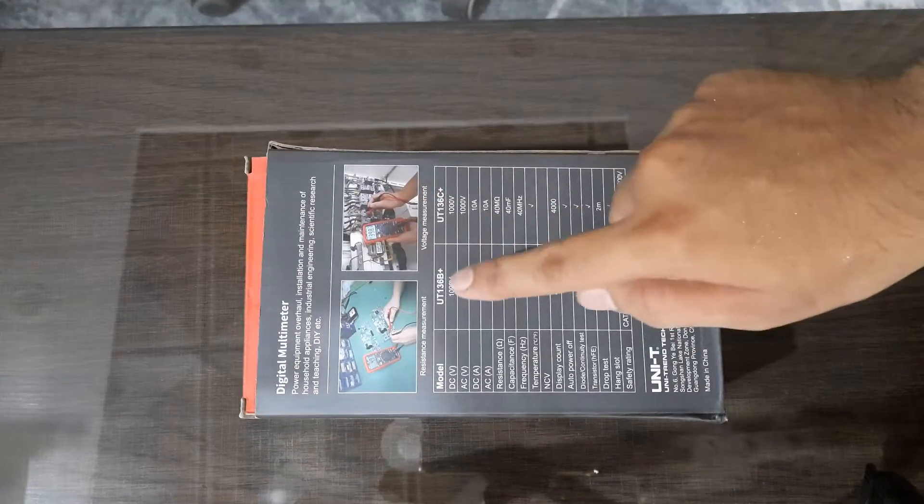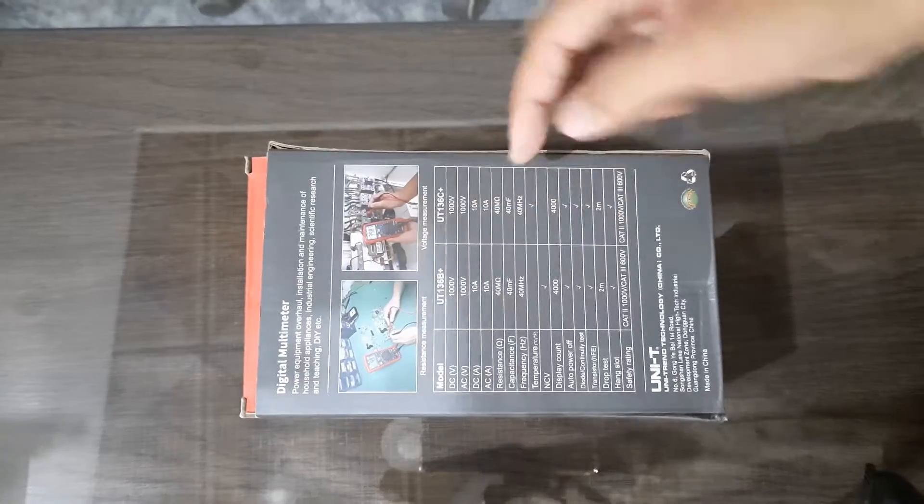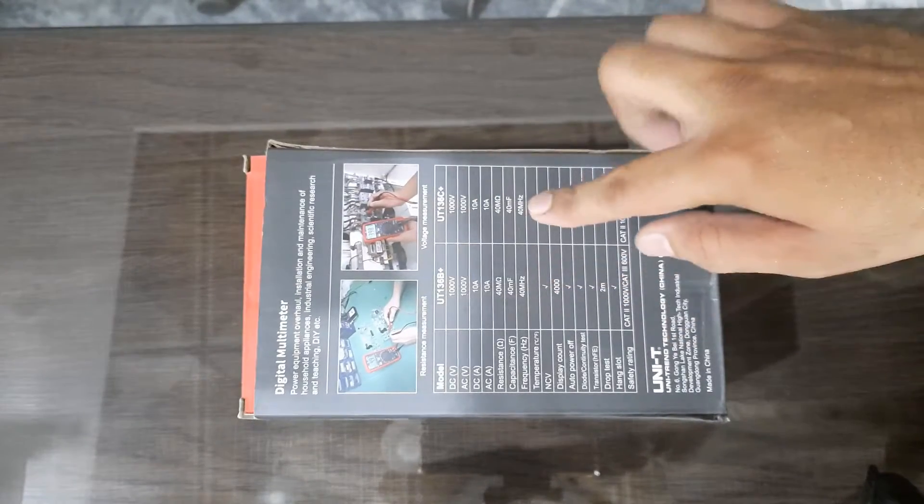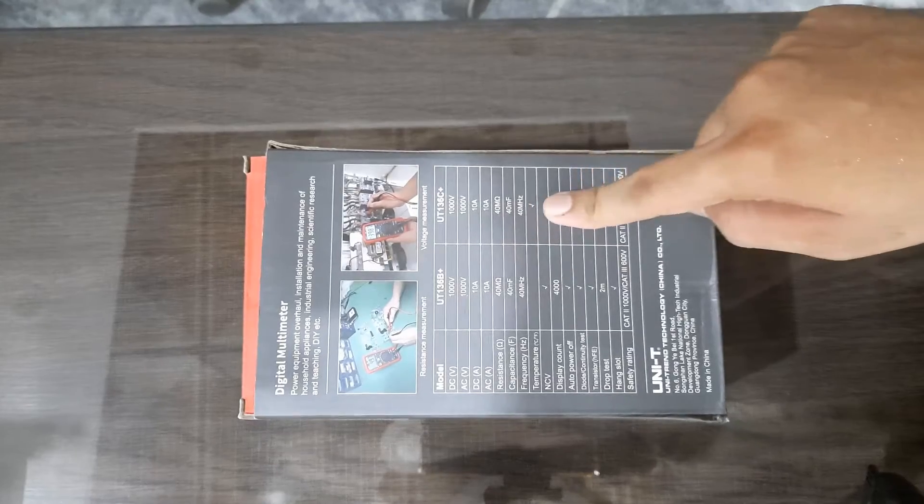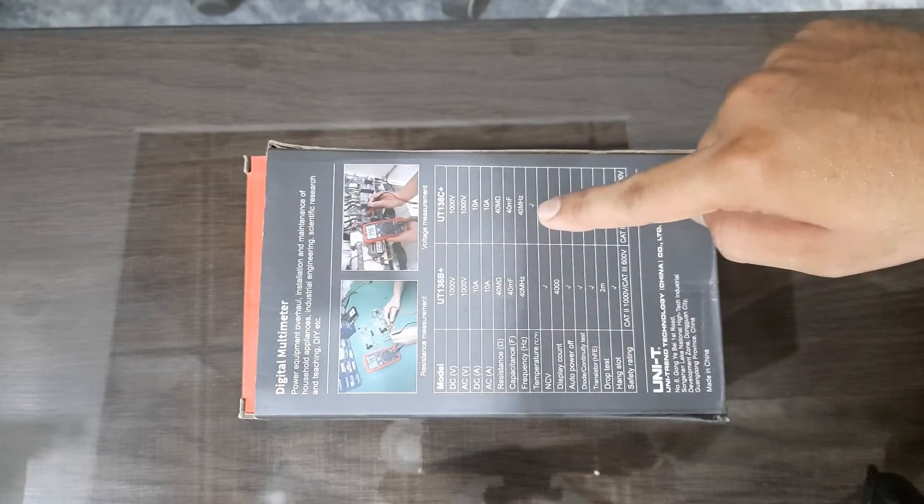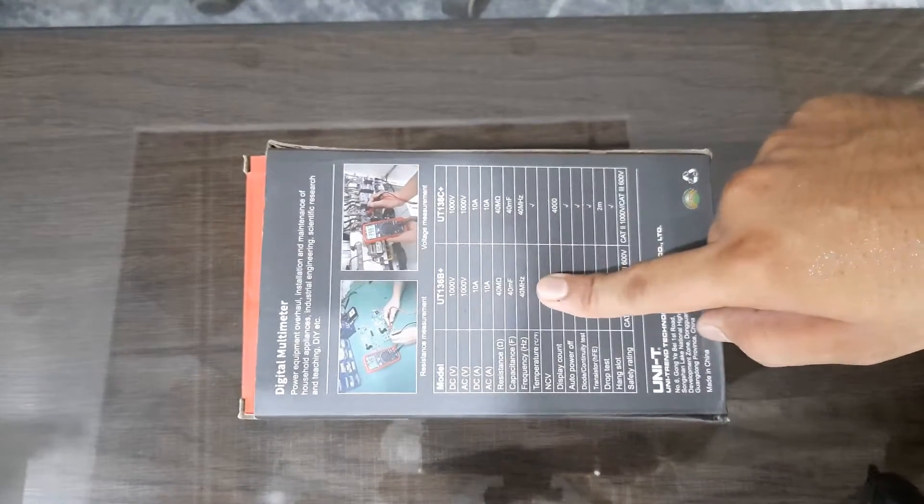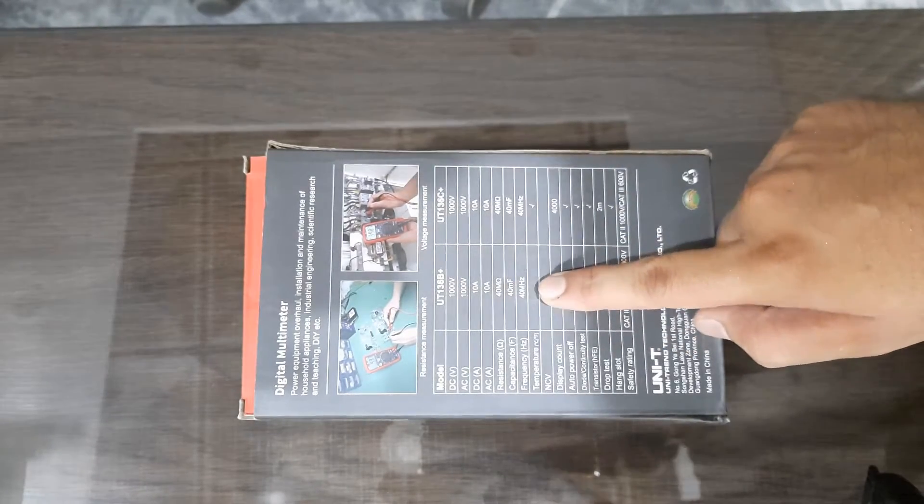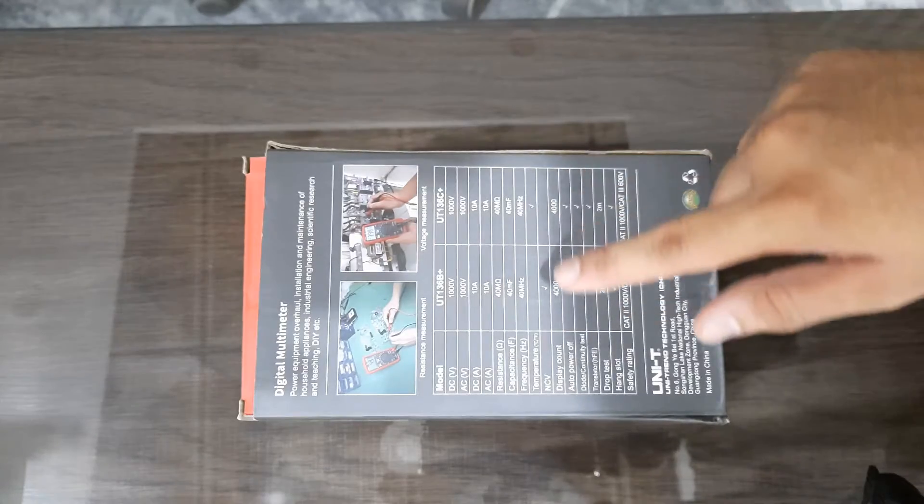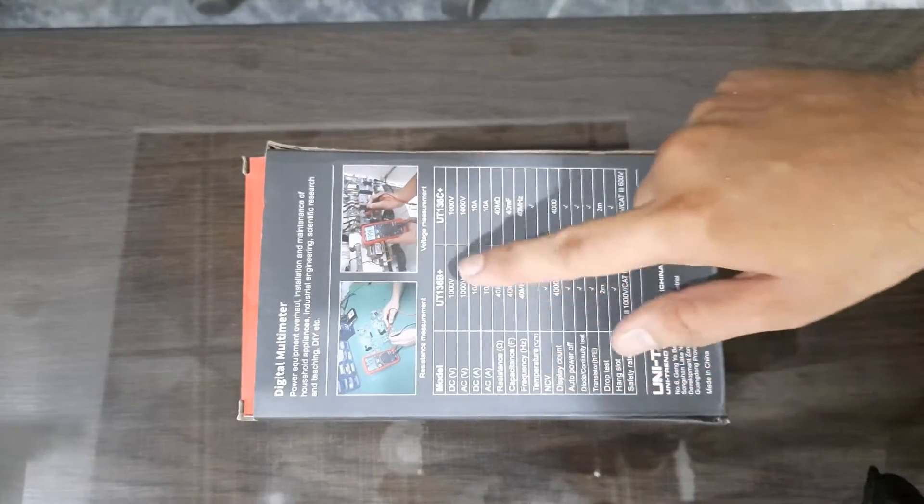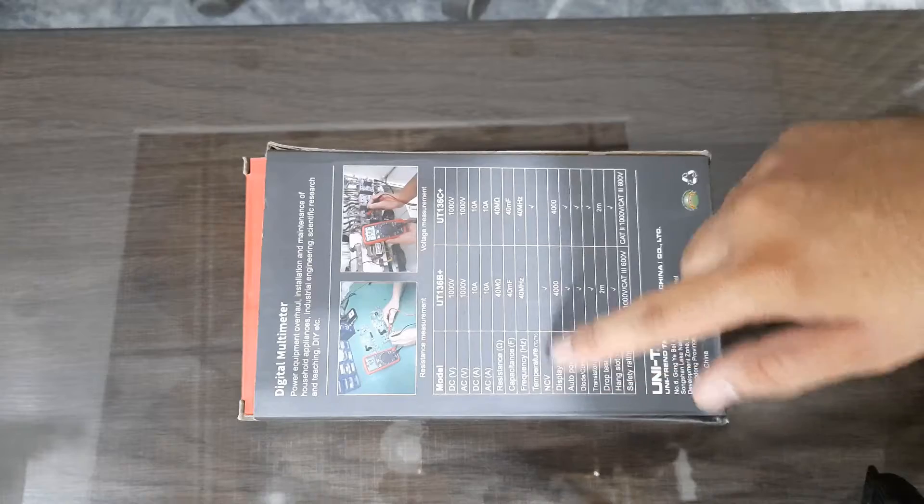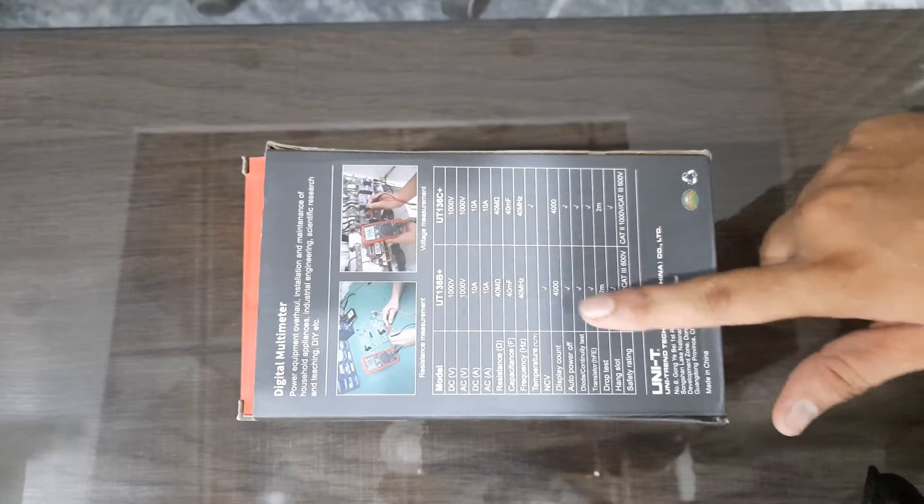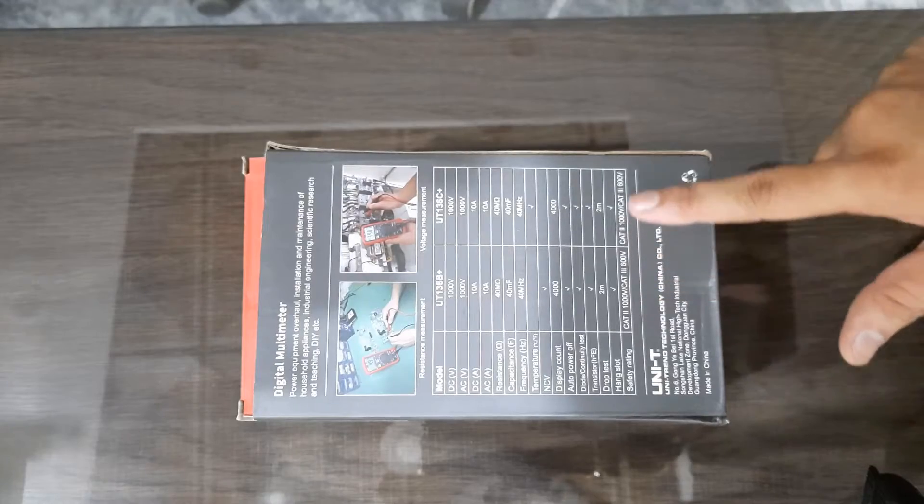Between both models, everything is almost the same. The C+ has a temperature sensor, but the B+ does not have this temperature feature. Otherwise, everything is the same.